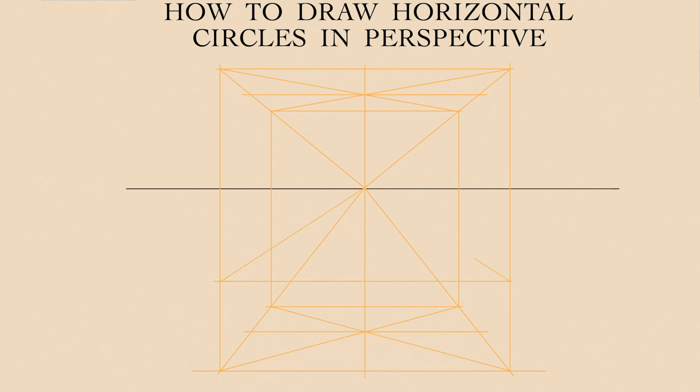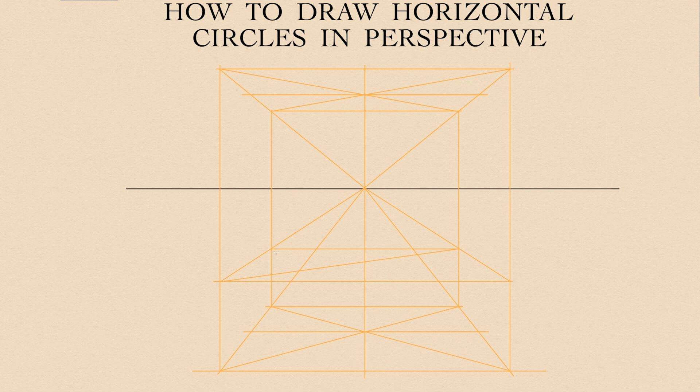There is one square above the horizon and two squares are below. Inside each square we can inscribe a perfect elliptical oval.